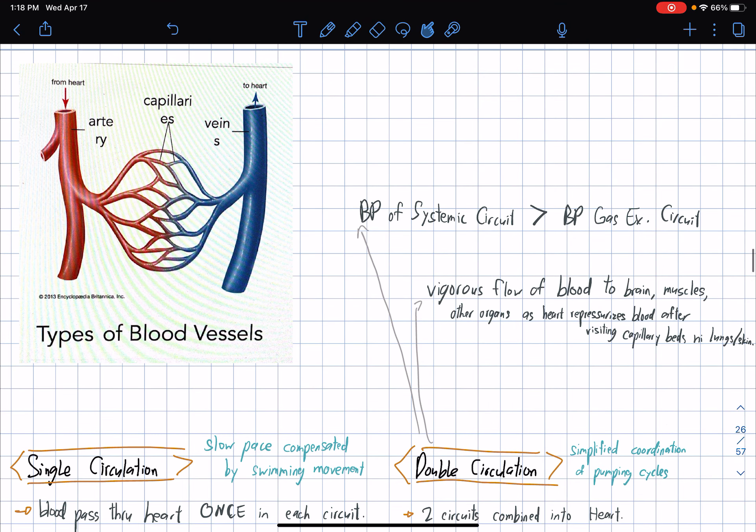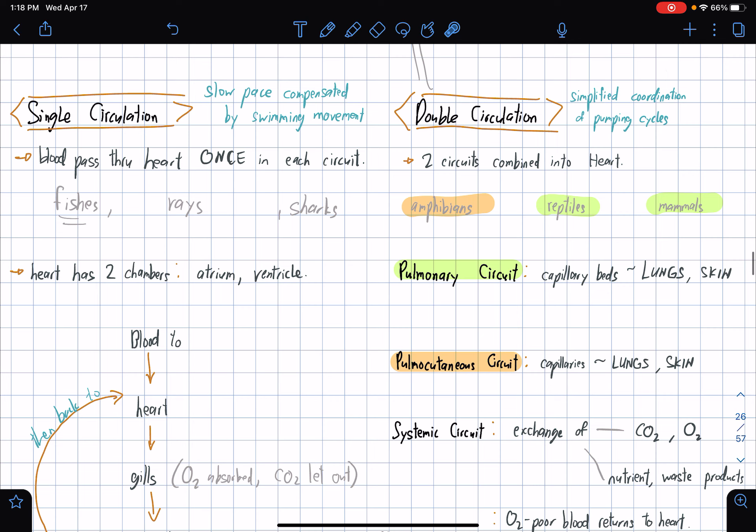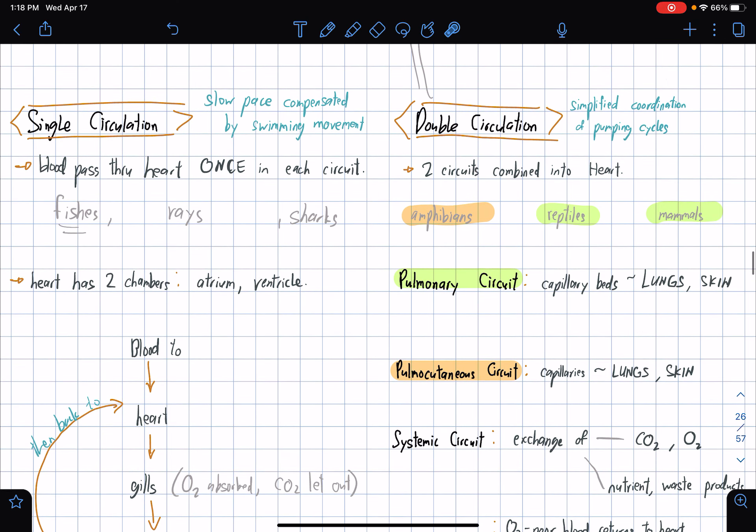Alright, so this is partly on circulatory system. Types of blood vessels: artery, capillaries, veins. Artery from the heart to the body, veins to the heart from the body. We have two kinds of circulation: single circulation and double circulation.